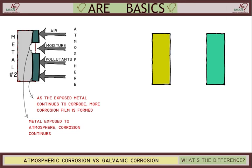This process that eats away the metal by forming a corrosion layer on the surface is called atmospheric corrosion. This atmospheric corrosion continues until the exposed metal is completely degenerated and converted into a corrosion film.